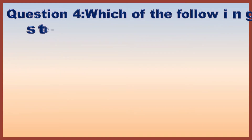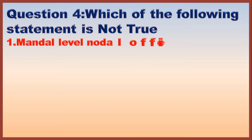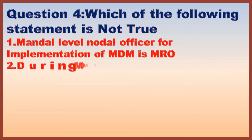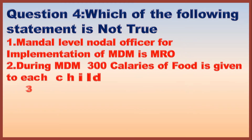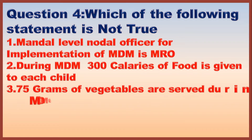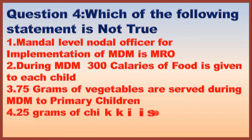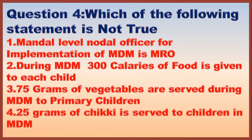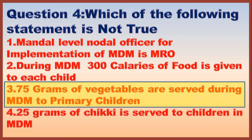Question 4. Which of the following statements is not true? Correct answer is option 3: 75 grams of vegetables are served during MDM to primary children.